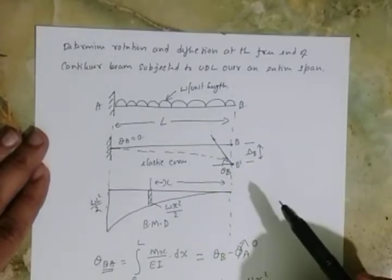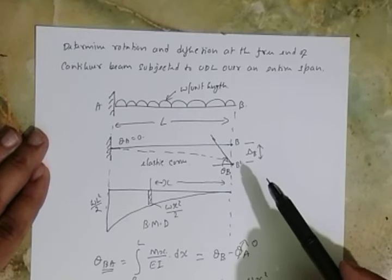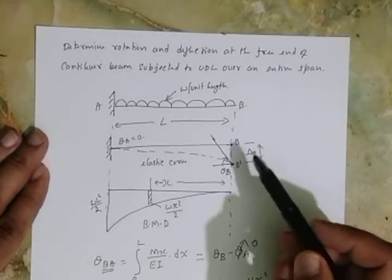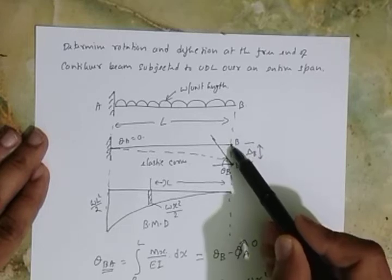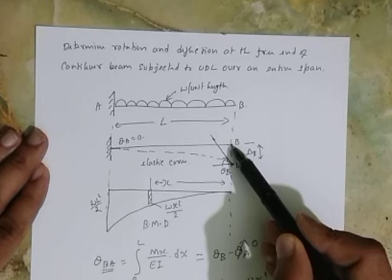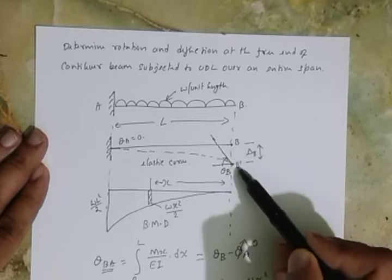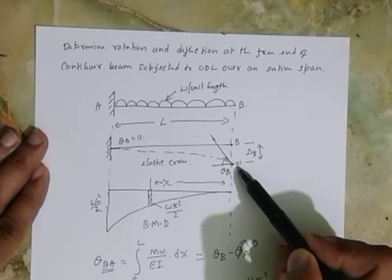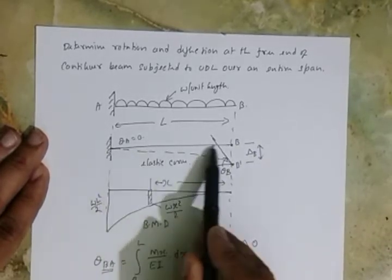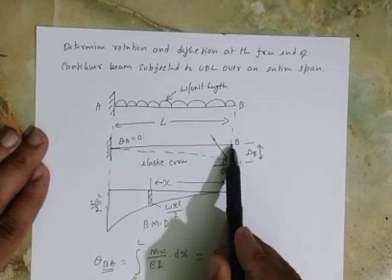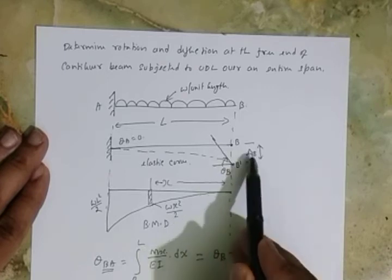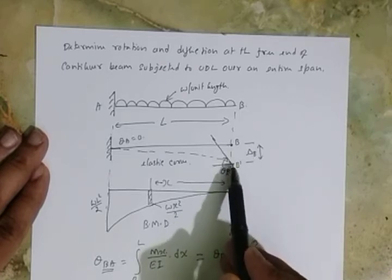Let's find out the deflection at the free end. If you recall the second moment-area theorem, it says the deflection at a point is measured perpendicular to its original straight line. So deflection at point B, measured perpendicular to its original direction, is B-dash — from the tangent drawn from another point. If I draw the tangent from A, then we are measuring the deflection at B.